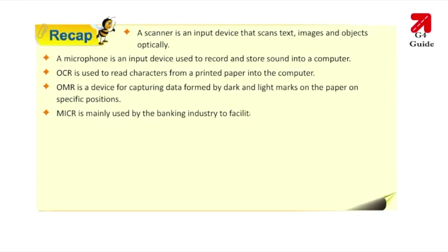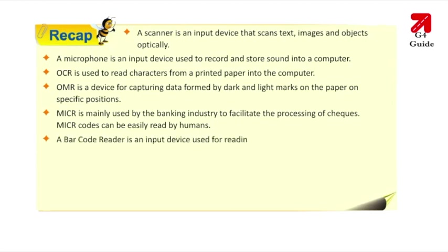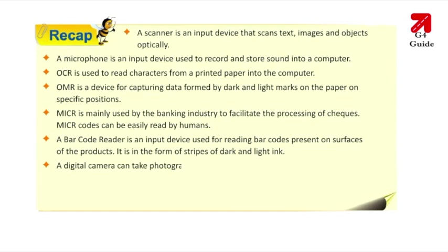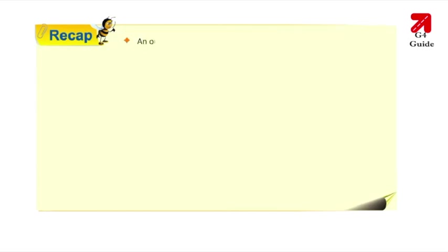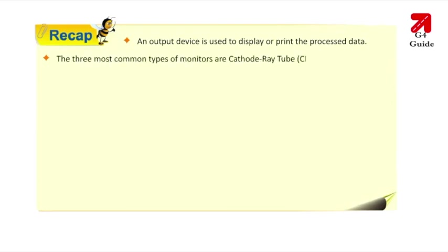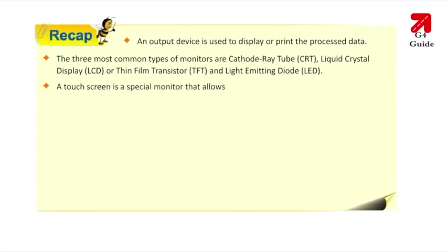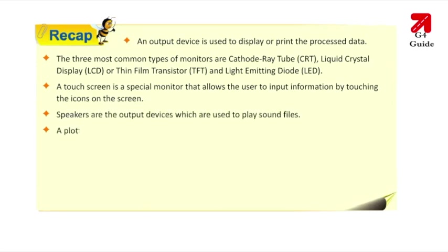MICR is mainly used by the banking industry to facilitate processing of checks, and MICR codes can be easily read by humans. A barcode reader reads barcodes in the form of stripes on product surfaces. A digital camera takes photographs that can be viewed and edited on a computer. A voice input device allows the user to control the computer using voice commands. Output devices include monitors — CRT, LCD/TFT, and LED — touch screens, speakers, and plotters.